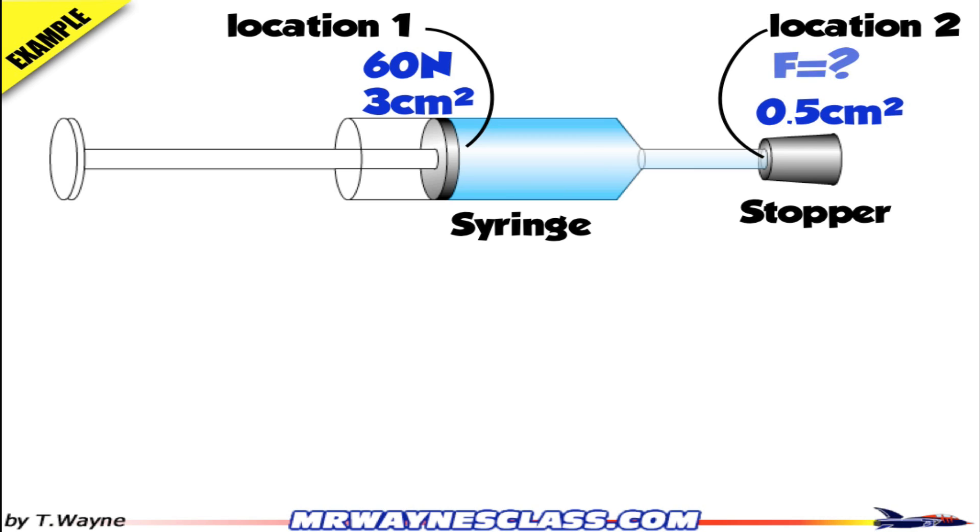I want to figure out the force at that smaller area. According to Pascal's principle, in an enclosed container, if I change the pressure at one location, it's felt immediately at the other location unmitigated. That is, the pressure's the same.